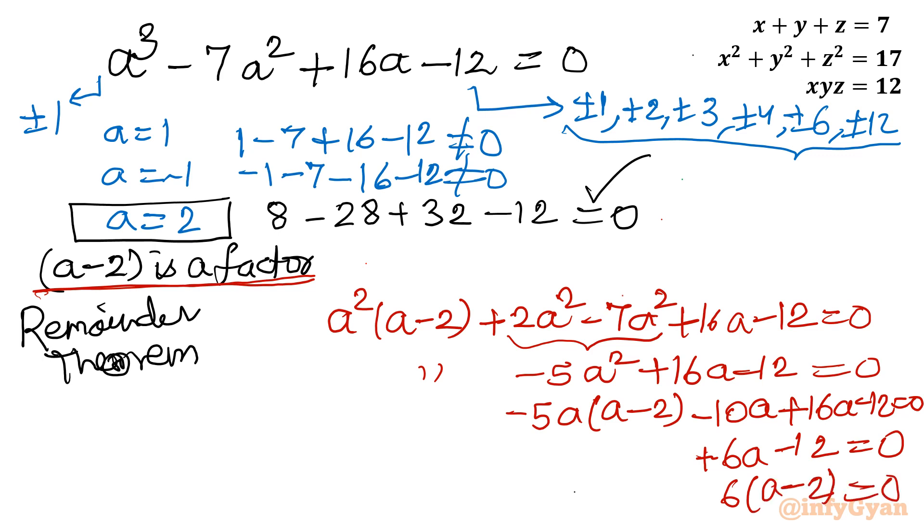Now you can easily see a minus 2 is overall common. Let me write the complete equation: a square a minus 2, then we are having minus 5a a minus 2, and then we are having plus sign only. Rest is 6 times a minus 2 equal to 0. Now let us take a minus 2 overall common, so it would be a square minus 5a plus 6.